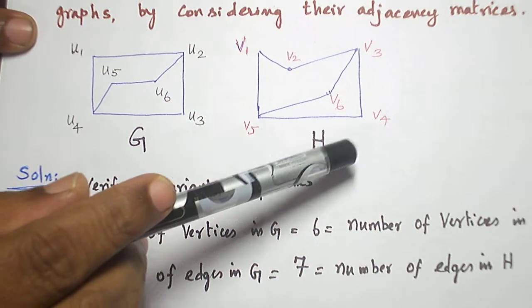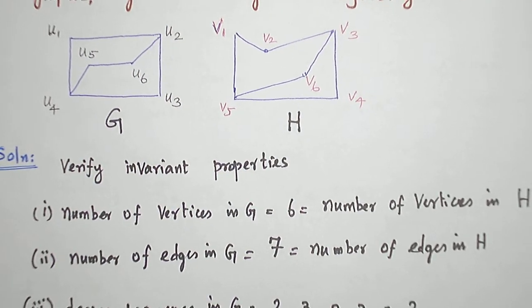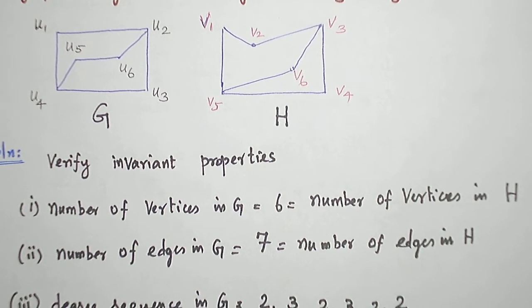v1, v2, v3, v4, v5, v6. These are all given. Now, let us first verify the invariant properties.